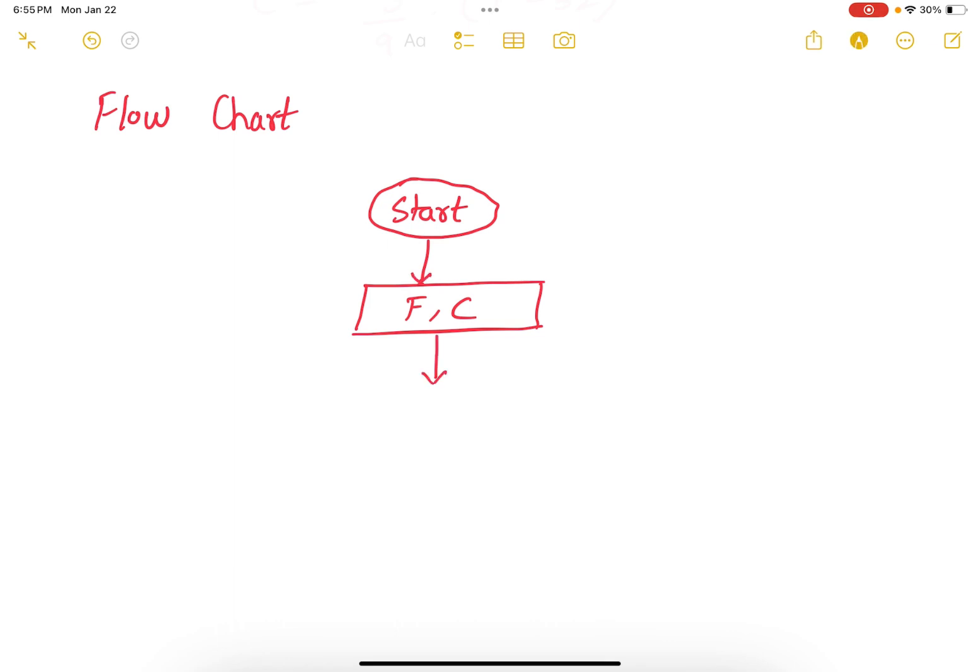So, have the variables listed, and then I'm going to read a value into F using scanf. Whenever I have a read, I'm going to use a parallelogram symbol. So, read value into F, then compute C using the formula given.